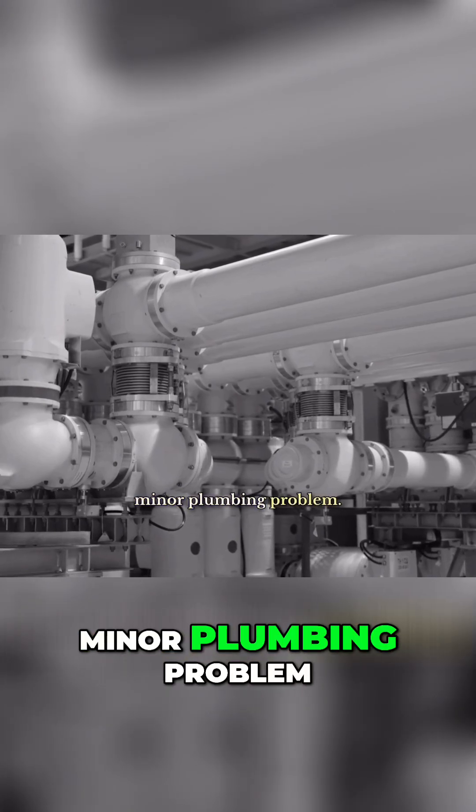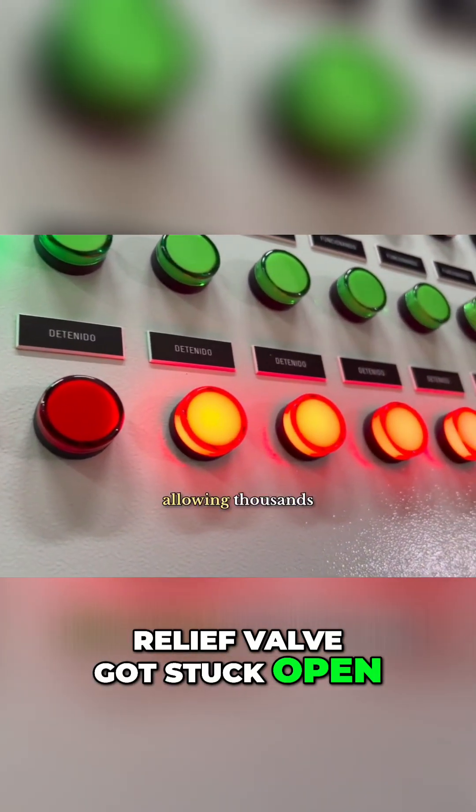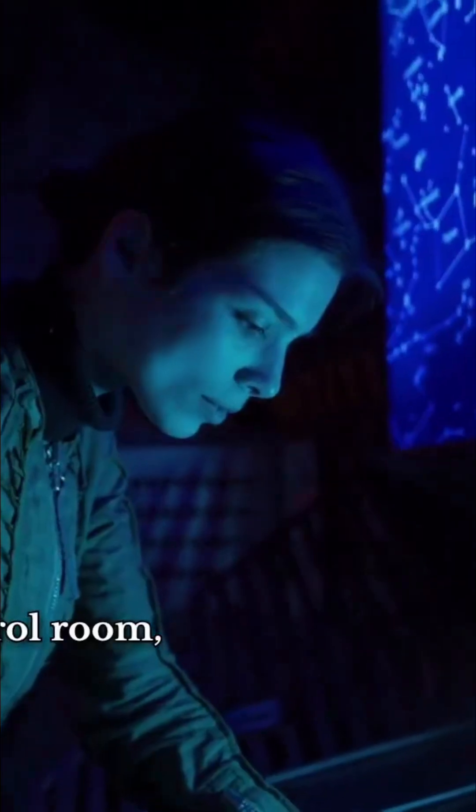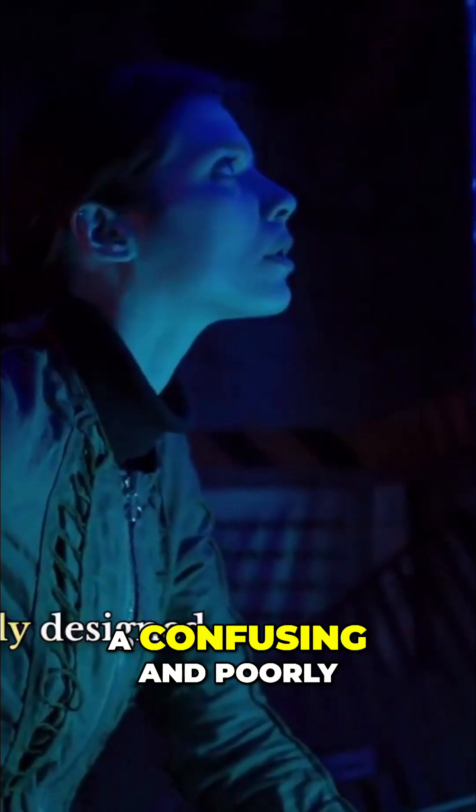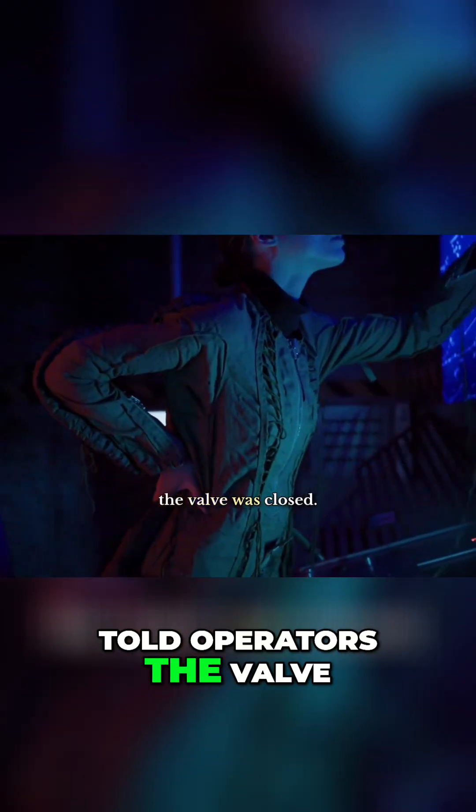It began with a minor plumbing problem, but then a crucial relief valve got stuck open, allowing thousands of gallons of reactor coolant to drain away. In the control room, a confusing and poorly designed indicator light falsely told operators the valve was closed.